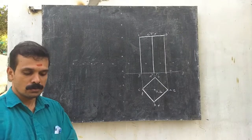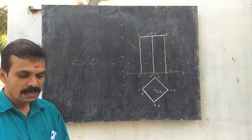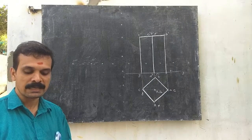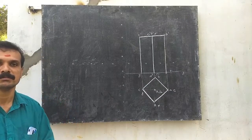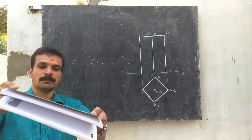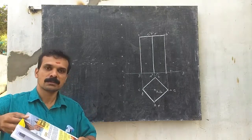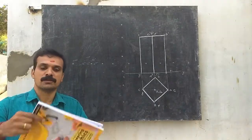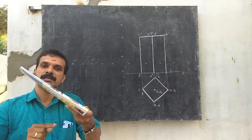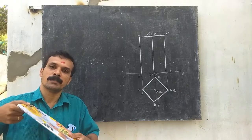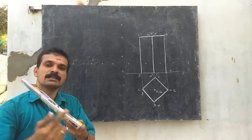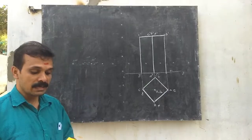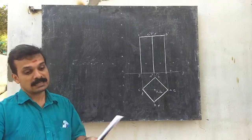Now read the question: it is cut by a plane perpendicular to VP and inclined 60 degrees with HP. In the front view, you can see the vertical trace — this inclination will be 60 degrees and the plane will be perpendicular to VP, so this angle in the front view will be 60 degrees.